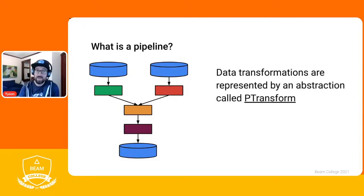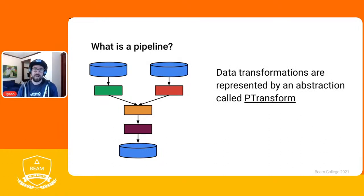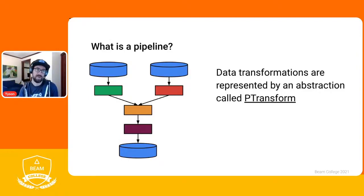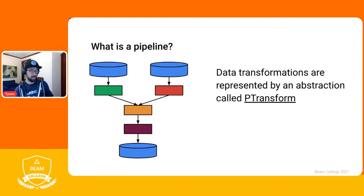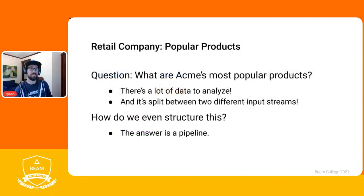Data transformations are P transforms. They're the things that actually do the computation logic — they're how you represent your business logic. You apply transforms to P collections to transform them from one type to another or filter them. There are lots of different transformations available in Apache Beam.